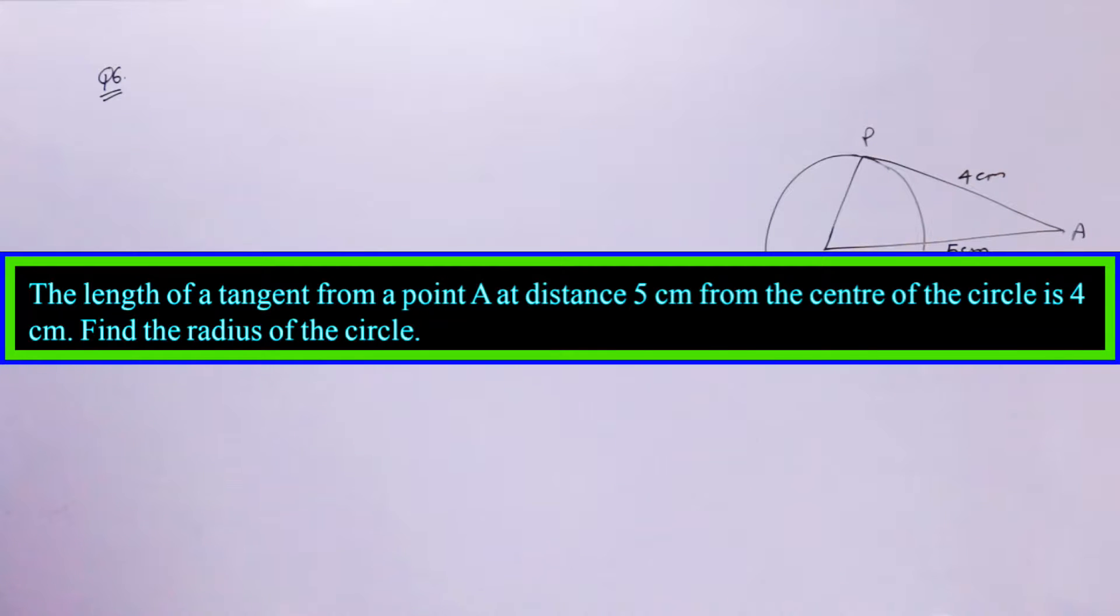Question number 6. The length of a tangent from a point A at distance 5 centimeter from the center of the circle is 4 centimeter. Find the radius of the circle.